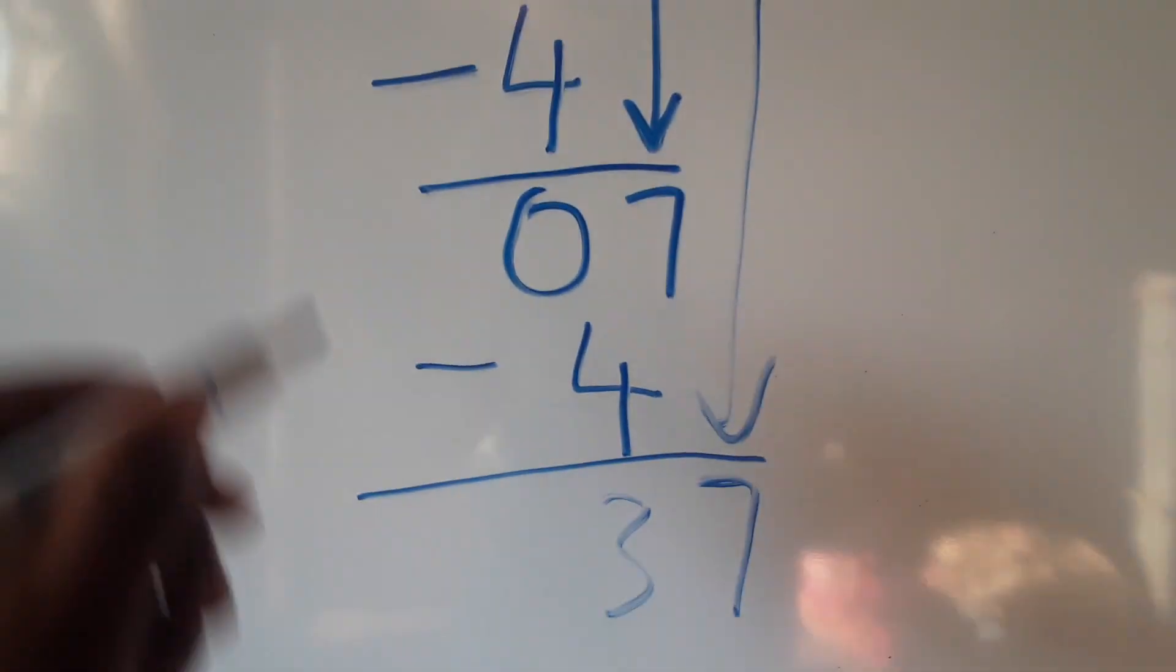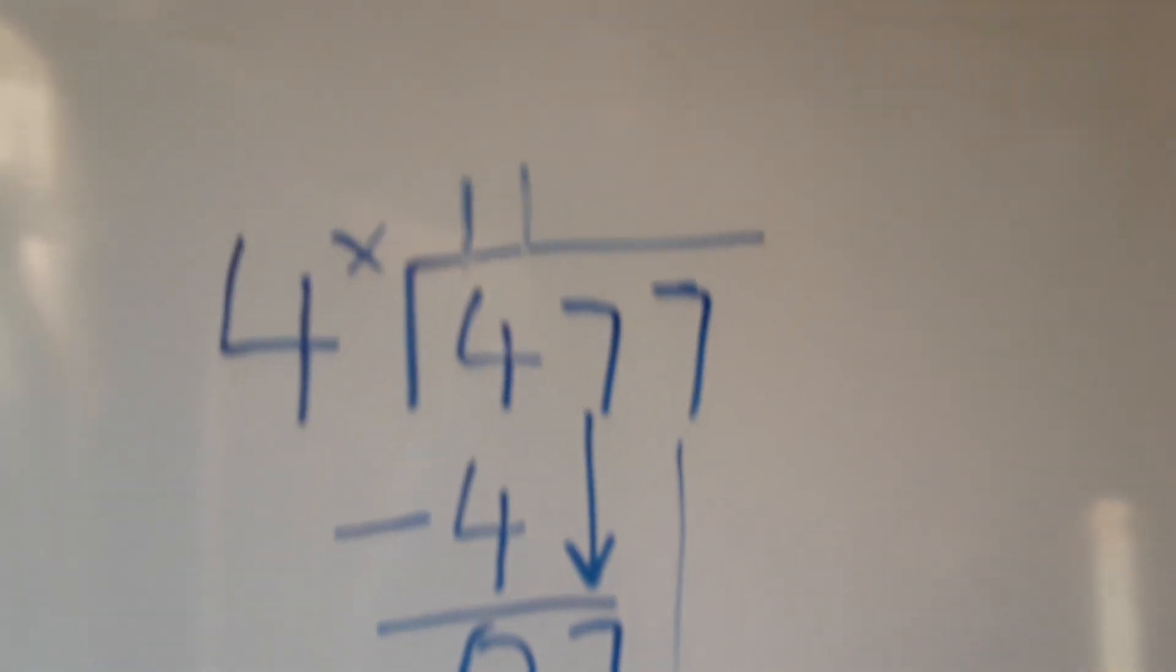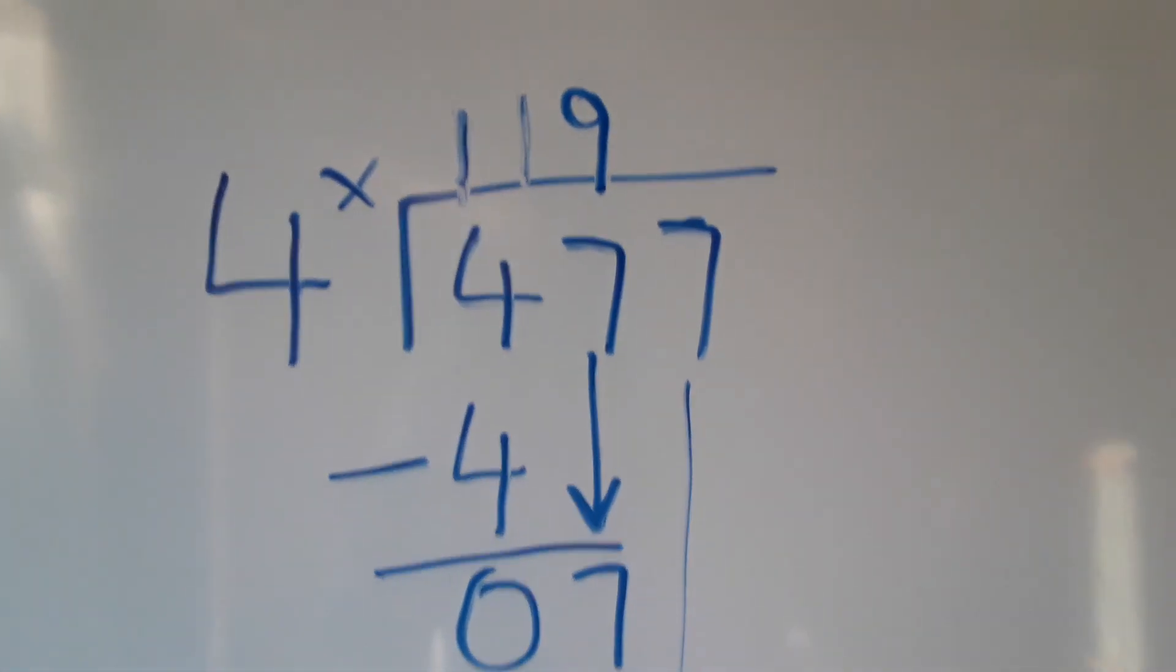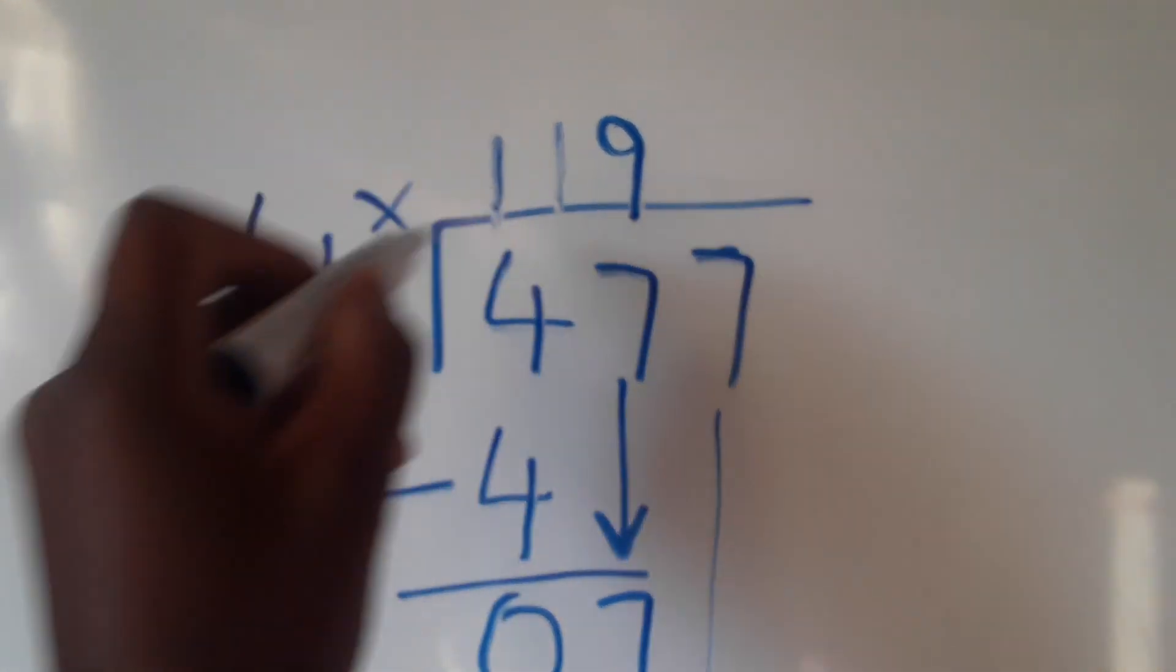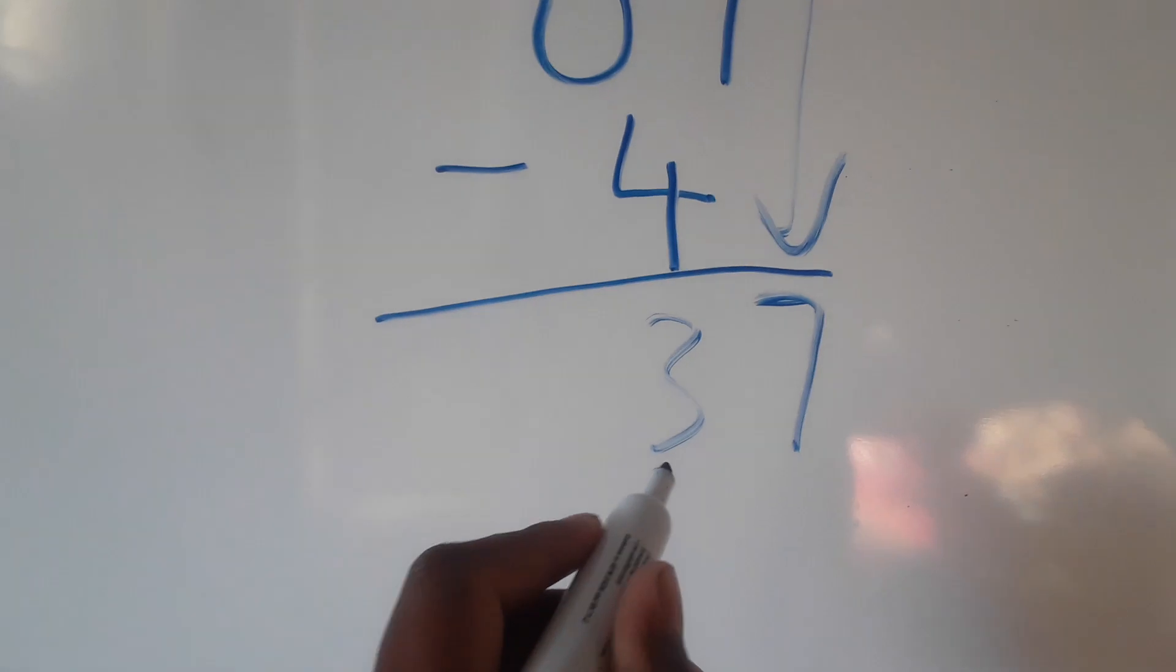Alright, then we're going to see how many times does 4 go into 37. So 4 goes into 37 nine times. We put 9. Sorry about that noise. So we'll say 9 times 4, which is going to give us 36.